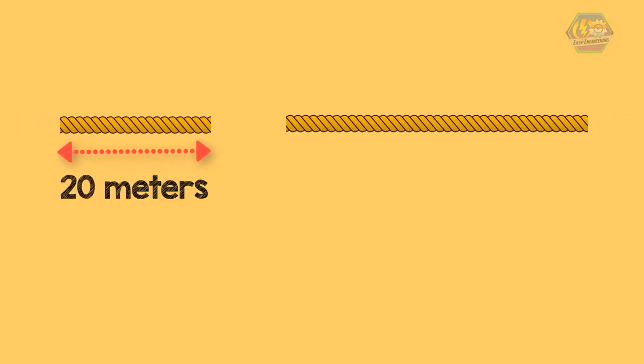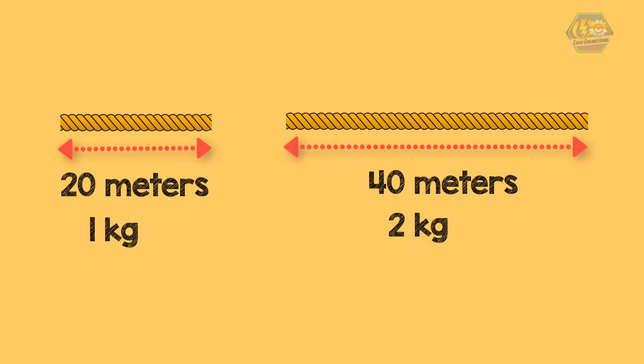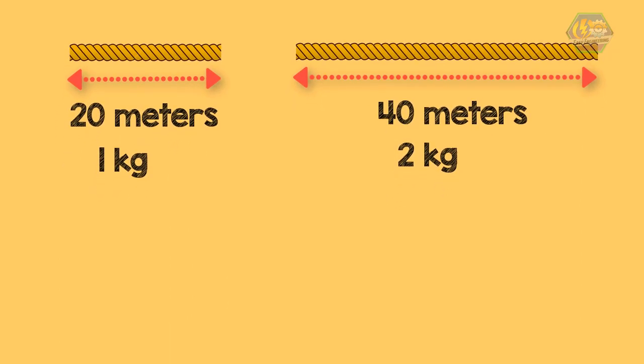Let's have another example. Suppose you have two ropes. First rope has a length of 20 meters and a weight of 1 kilogram, while the second rope has a length of 40 meters and a weight of 2 kilograms. Are the two ropes proportion? The ratio of rope 1 is 20 is to 1, while the rope 2 is 40 is to 2. We can write it like this.